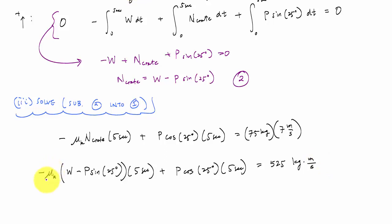I know mu K is 0.3, W is MG. So that's 75 kilograms, the mass times gravity of 9.81 meters per second squared. I got one equation, one unknown and I solve for P. And finally P is 315.3 newtons. And that is the force applied on the rope.